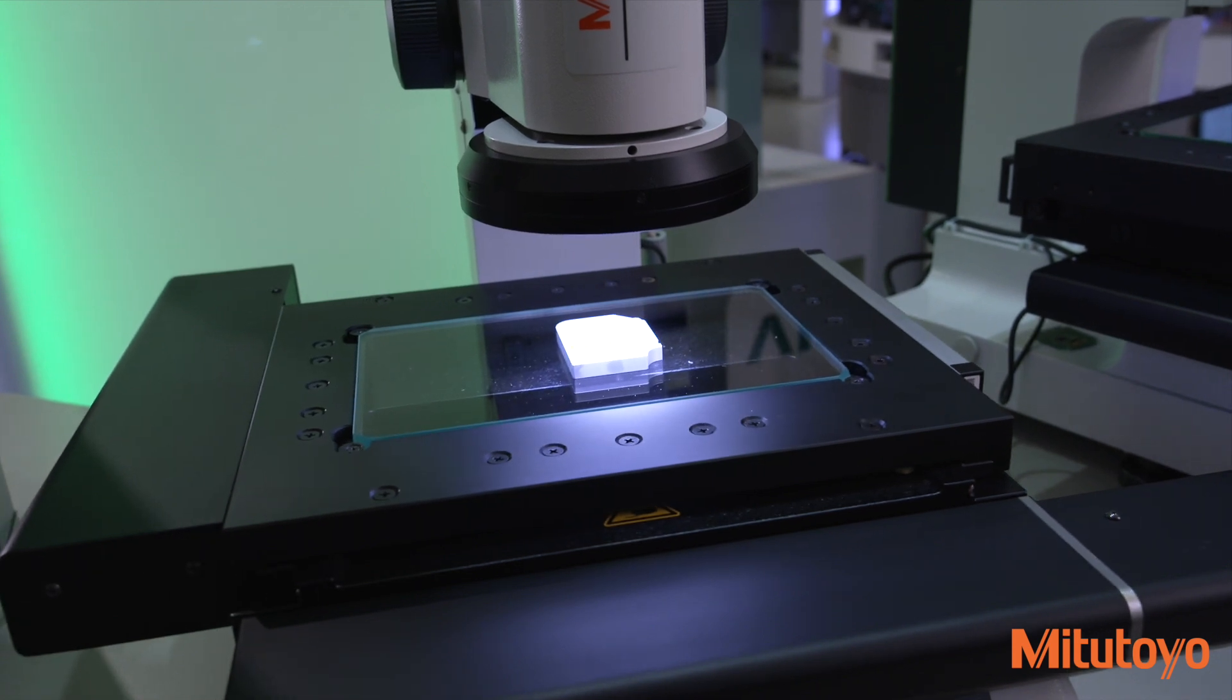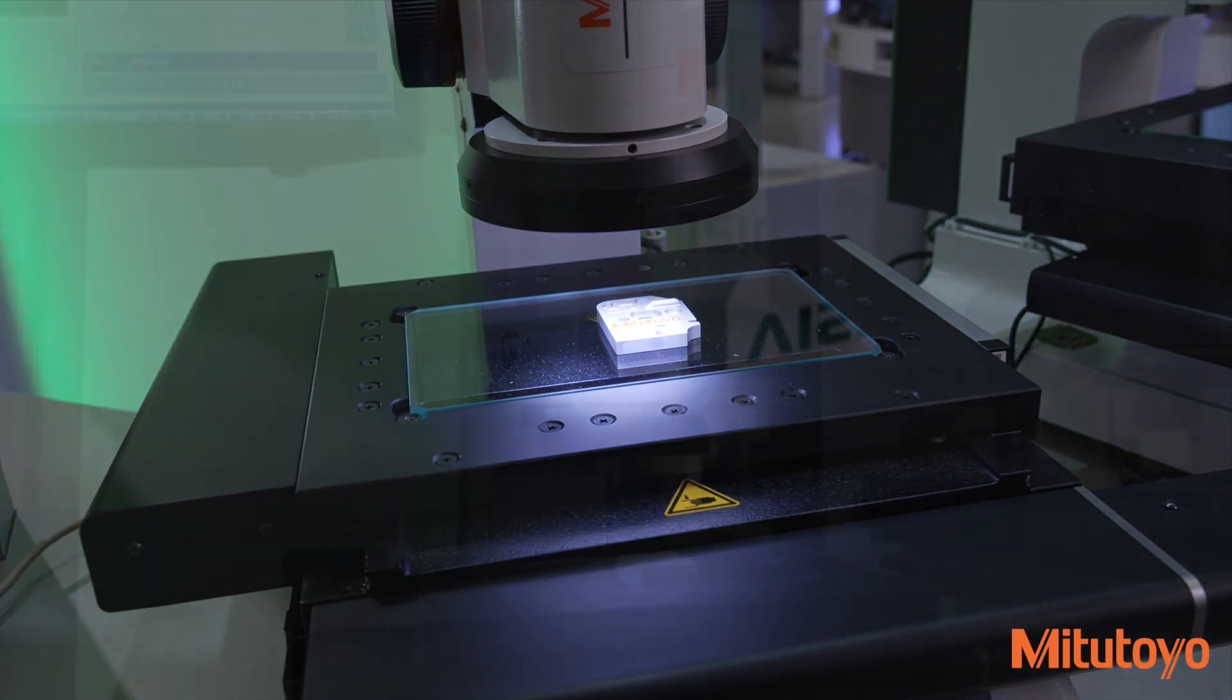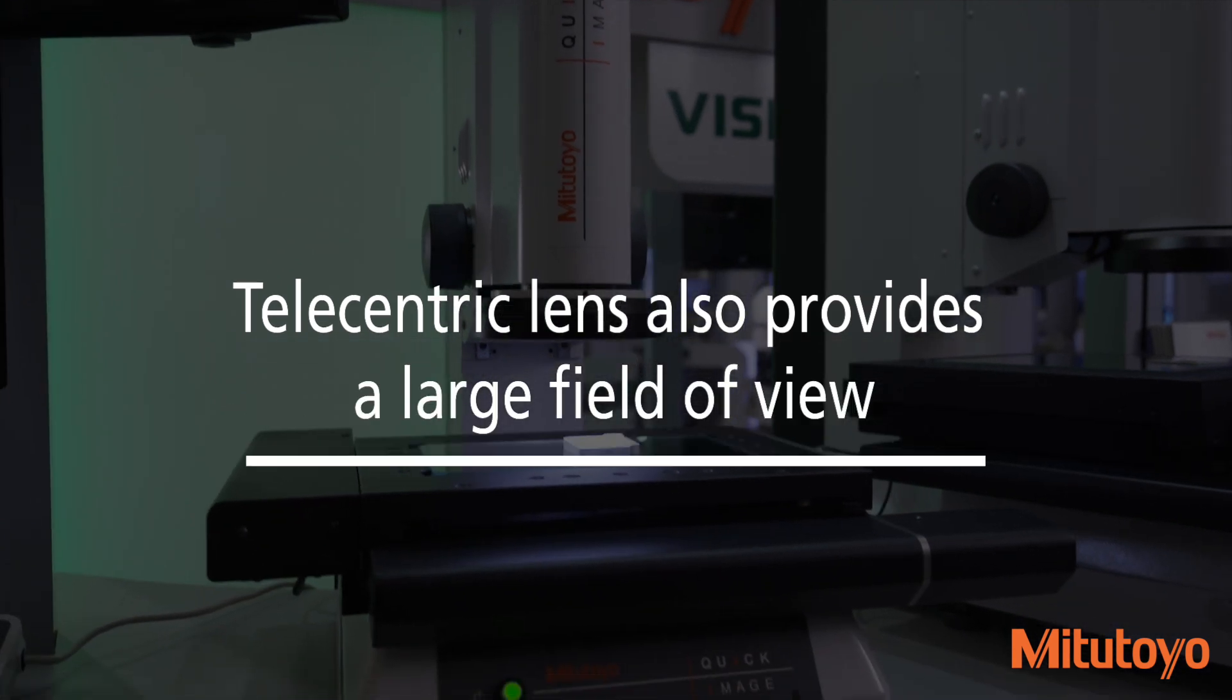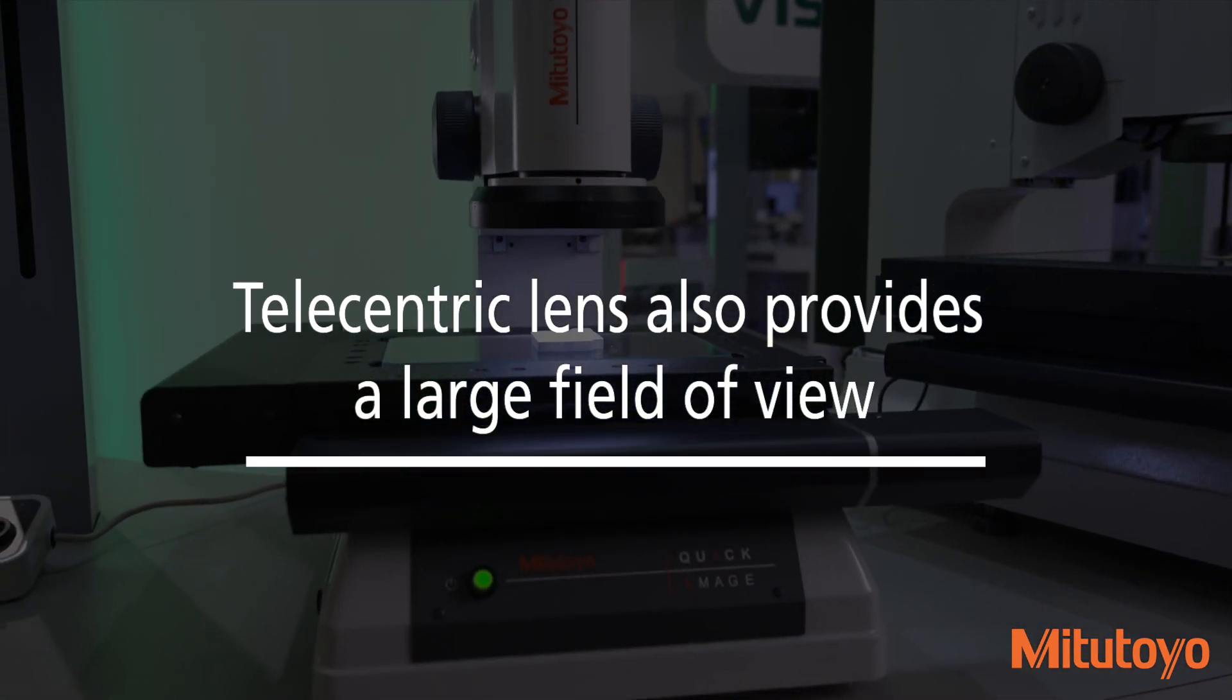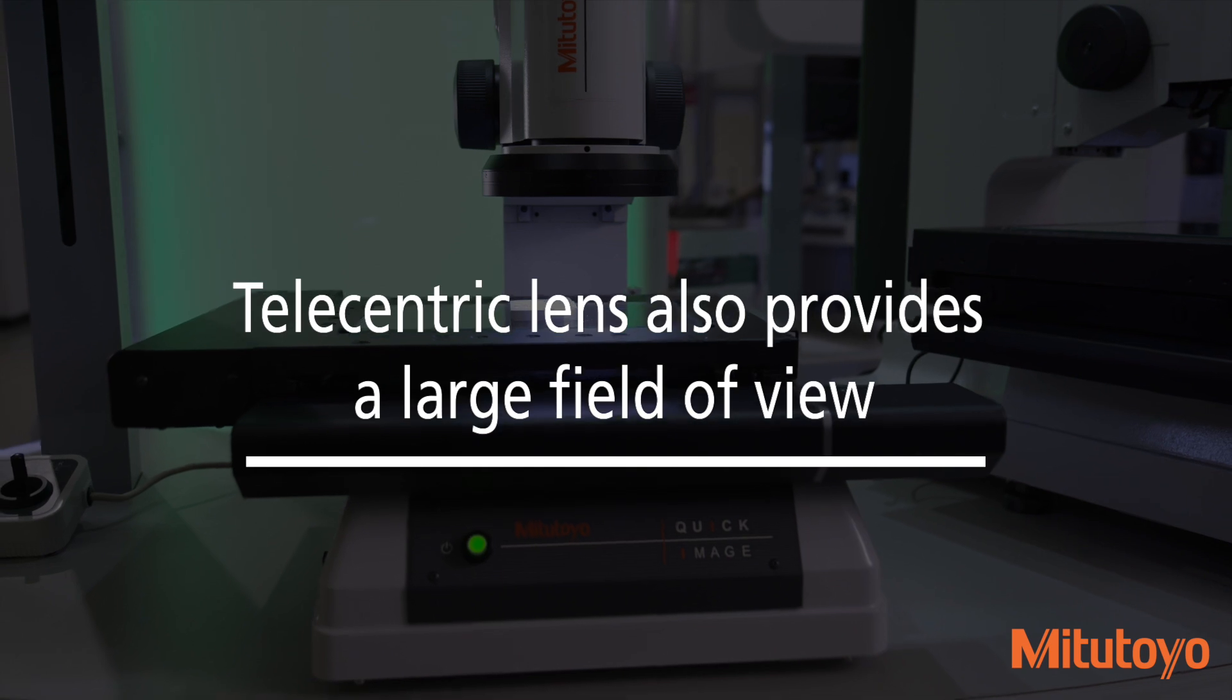A double telecentric optical system eliminates human focusing errors. Errors due to height are greatly minimized within a depth of focus up to 22 millimeters. The telecentric lens also provides a large field of view, allowing easier inspections of larger work pieces in a compact space.